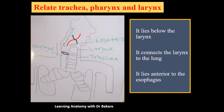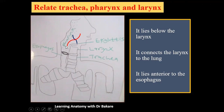Looking at the relationship between the trachea, the pharynx, and the larynx: in the cervical and thoracic region, we have the nasal cavity, the oral cavity, and the larynx. The pharynx is located behind the nasal cavity, the oral cavity, and the larynx. The dotted area represents the pharynx, subdivided into the nasopharynx, oropharynx, and laryngopharynx.